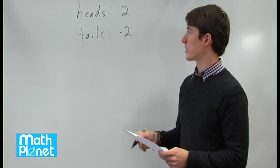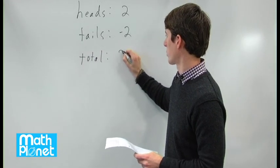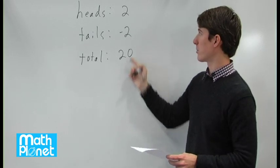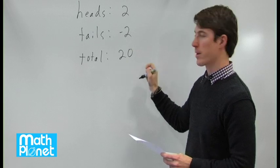After 100 tosses, the total points was 20. So there's an excess number of heads we can see because there's a positive outcome. So we have to figure out how many heads this is.